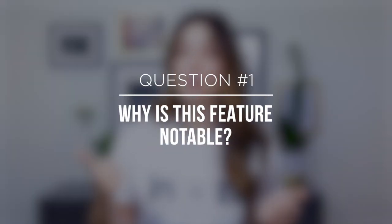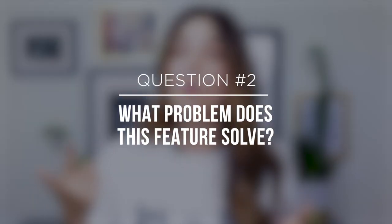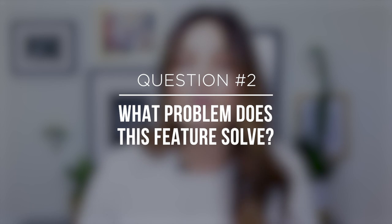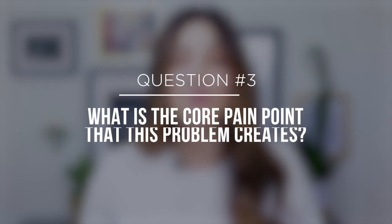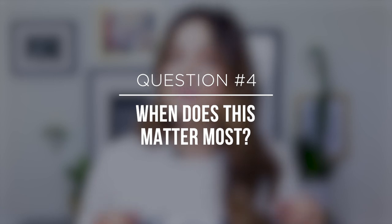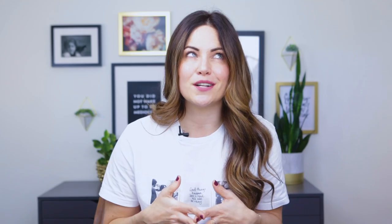Question one: why is this feature notable? Batteries included — it's ready to use. Question two: what problem does this feature solve? It saves you that extra cost and trip to the store to buy batteries. Question three: what is the core pain point that this problem creates? Frustration, disappointment, maybe an upset child or anger. Question four: when does this matter most? Christmas morning, a birthday, some sort of celebration when you're giving your child a toy. Question five: why does your customer need this? To remove stress, peace of mind.